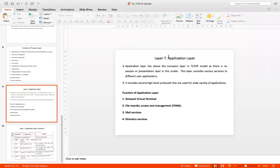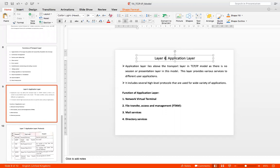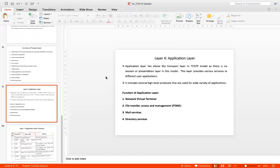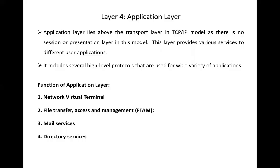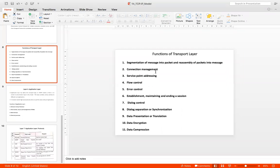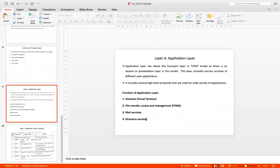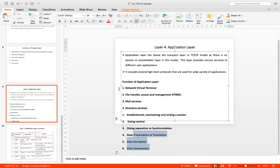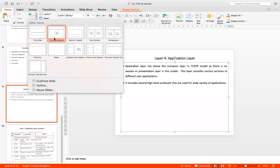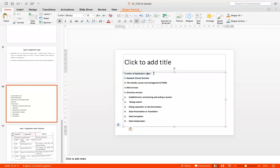The next layer is layer number four, called the application layer. The application layer in TCP/IP has functionality similar to the session layer, presentation layer, and application layer of the OSI model combined. You will get all of these services here, and these are the functions of the application layer.